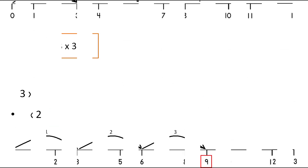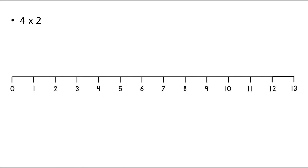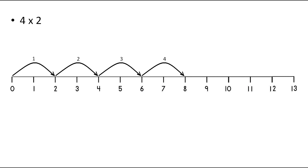Let's take the third one, that is 4 into 2, which means 4 times 2. So, move 2 units at a time to the right and make 4 such moves. The first move is on 2, the second move is on 4, third move is on 6 and the fourth move is on 8. Therefore, 4 into 2 is equal to 8.